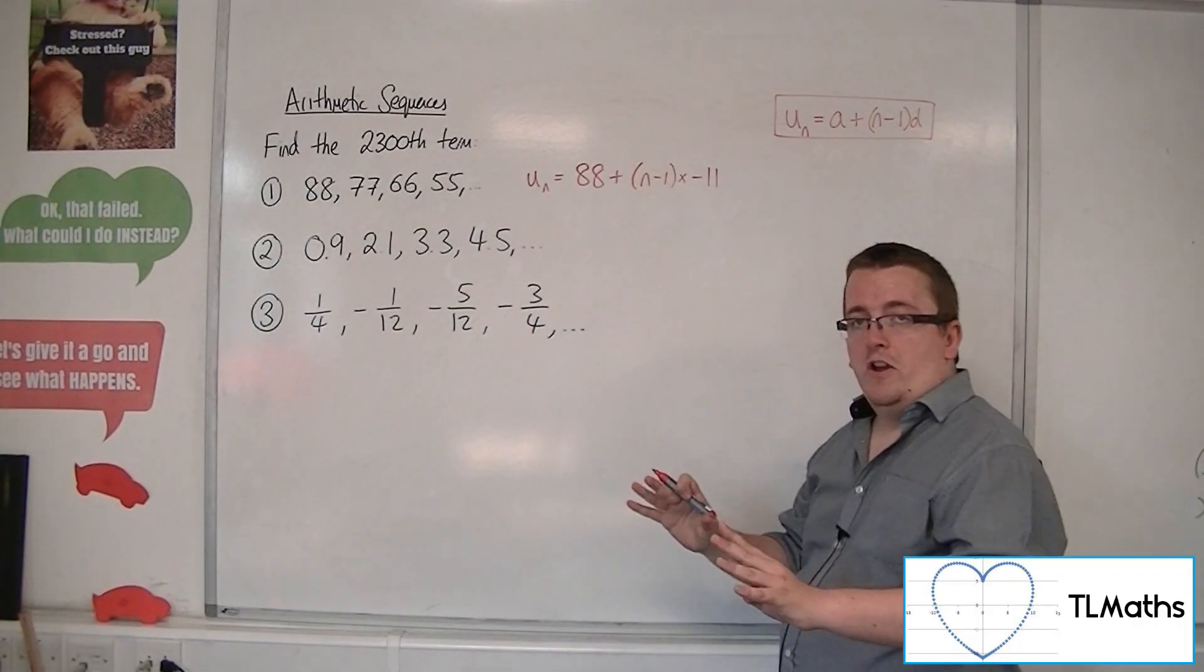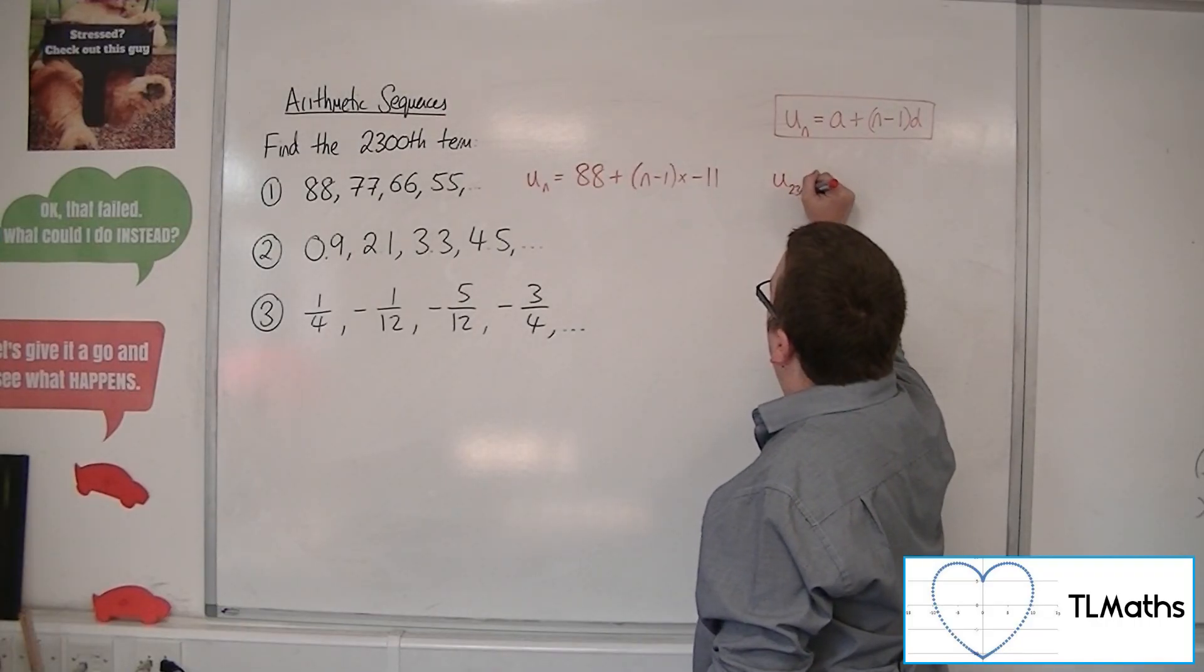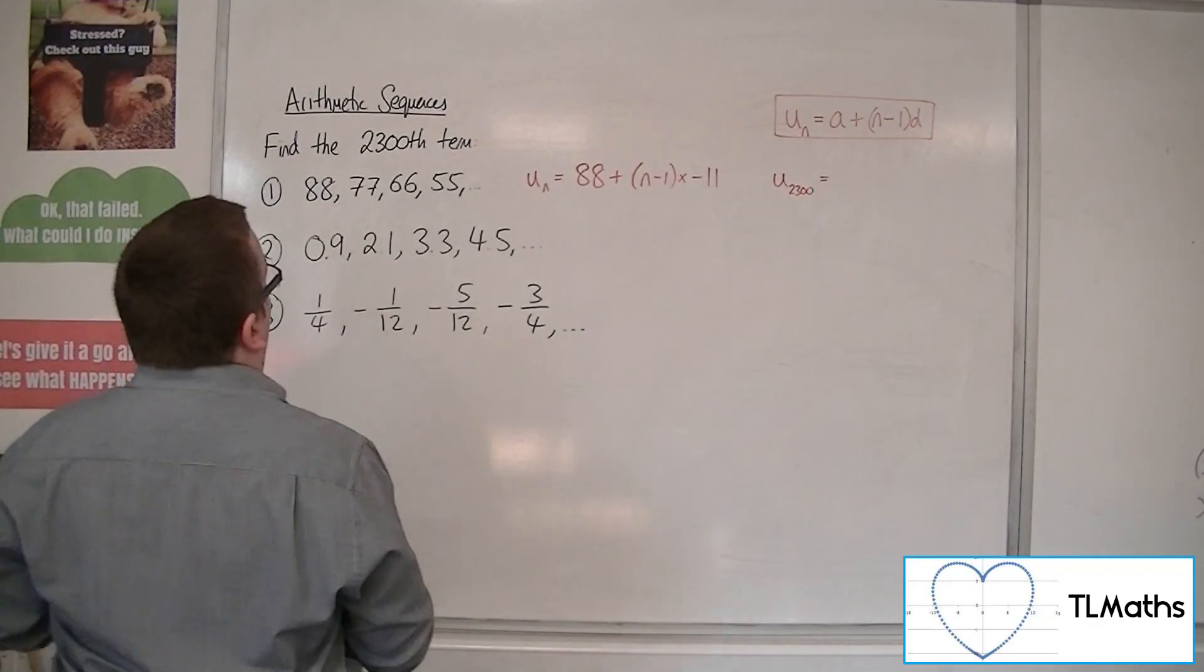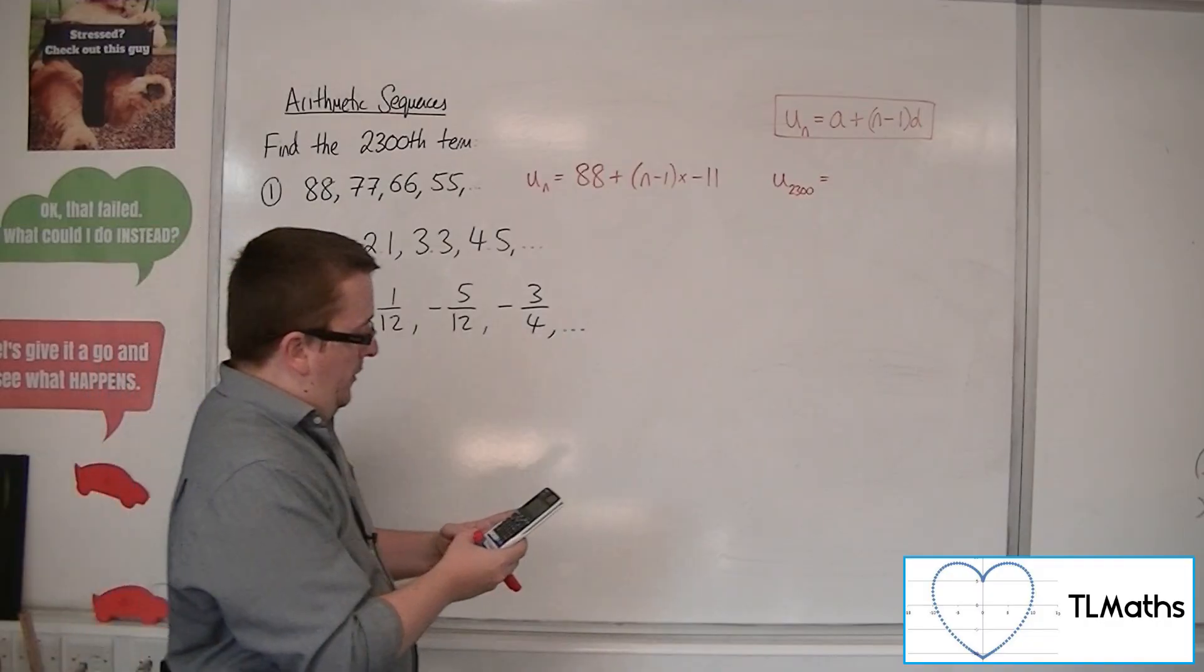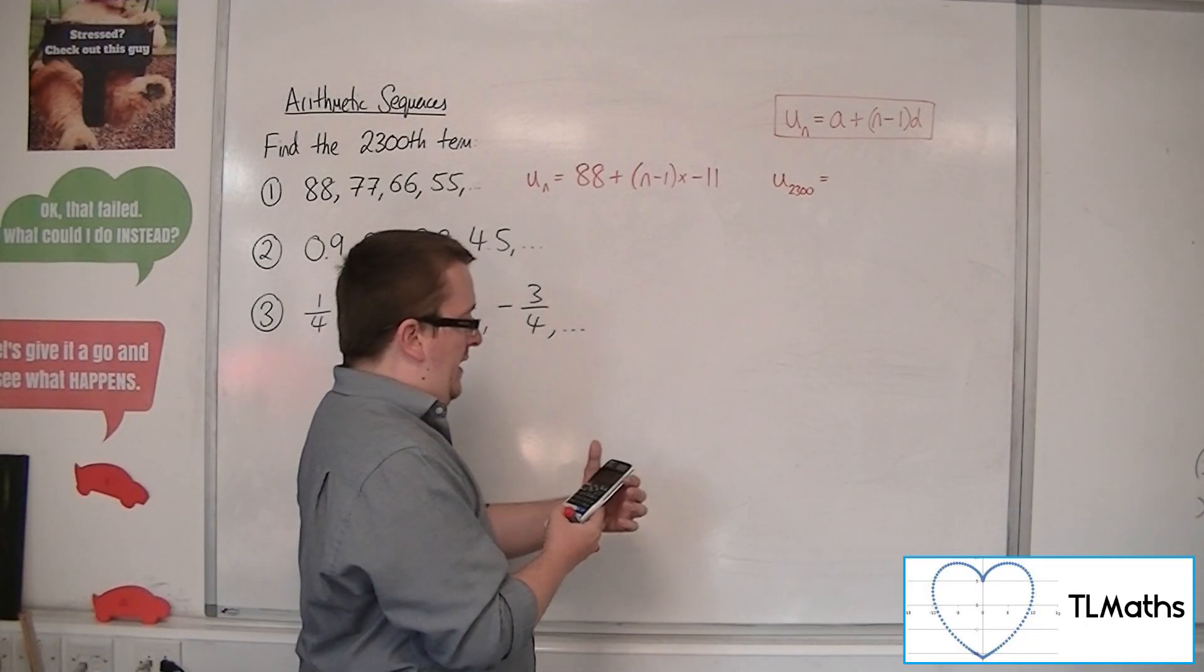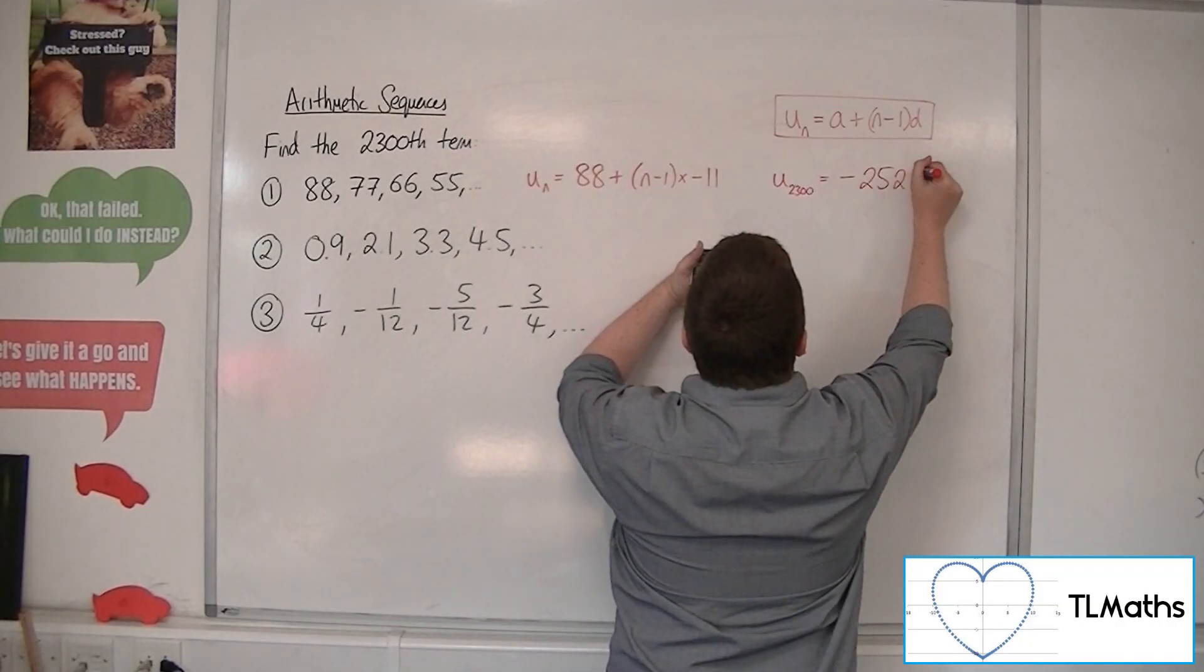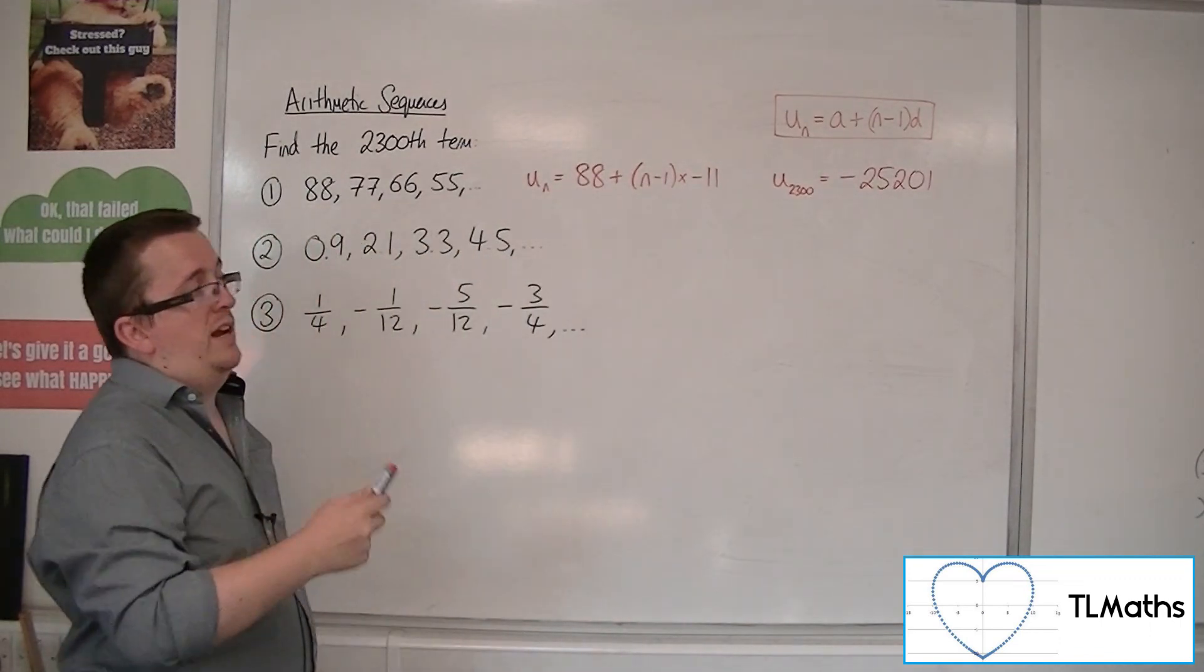Now I'm not going to bother rearranging it. I'm going to go straight in to u2300. So we're going to have 88 plus 2300 take away 1 times by minus 11. And this gets me minus 25,201. So that is the 2300th term.